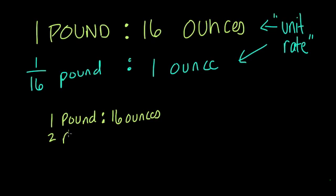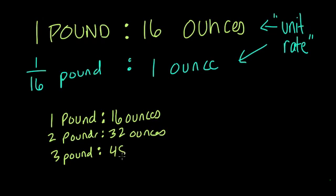So if I have two pounds, that would mean I have what? Well, I'm doubling the pounds, and since there are 16 ounces for each pound, I should also double the ounces. That's 32 ounces. And if I add another pound, every time I add a pound, I add 16 more ounces, and I would get 48 ounces.